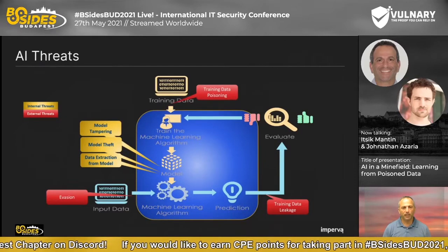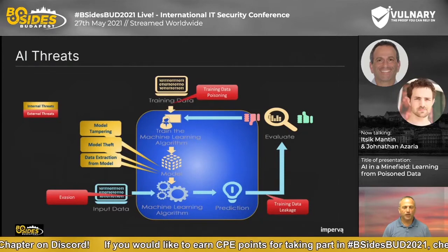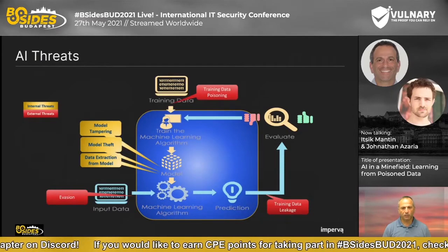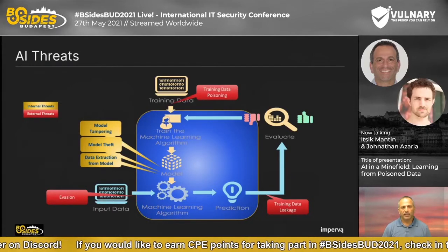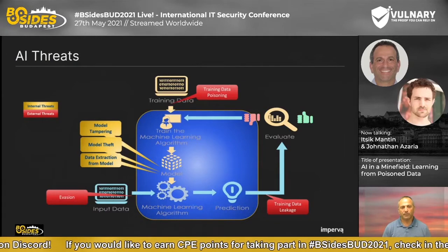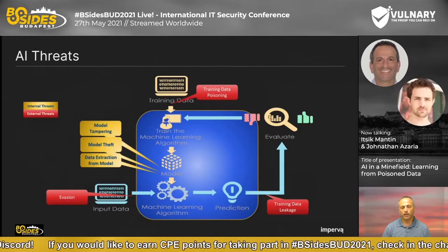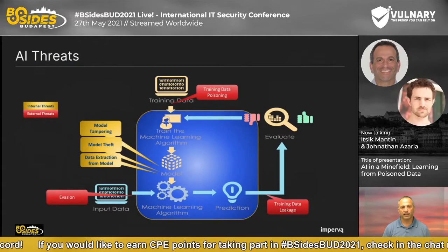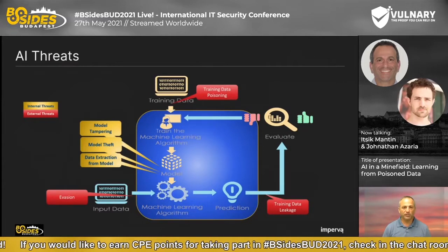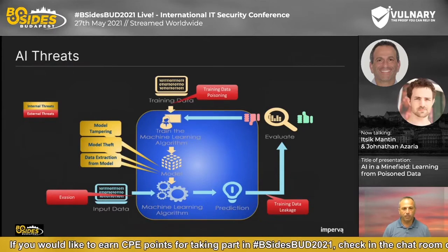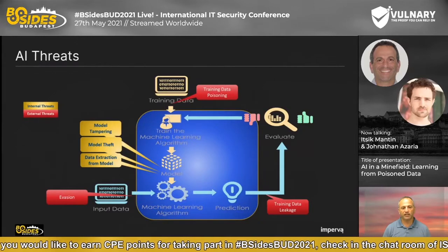The second threat is training data poisoning — we'll speak about that in more depth later on. The third is training data leakage, a slightly more esoteric threat. During training, data from the training set is sometimes embedded into the model, and there are ways to extract and recover this leaked data. When you use sensitive data for training — health records, PII, things like that — this risk should be considered and addressed properly.